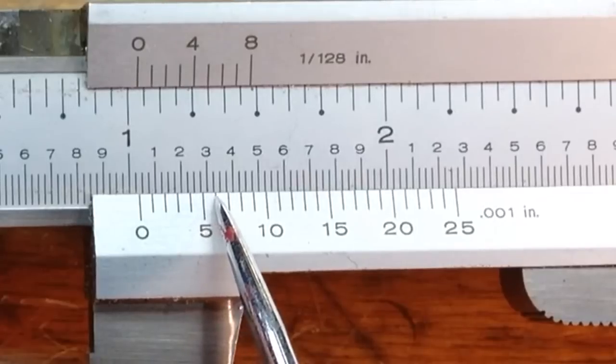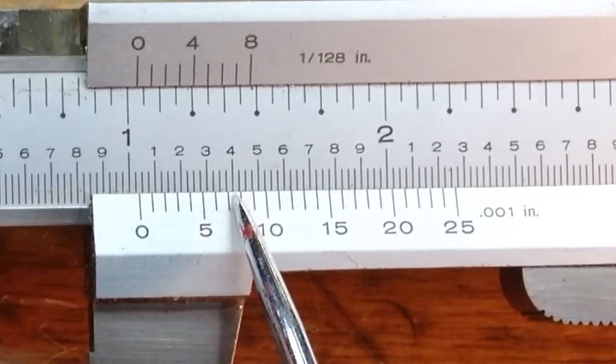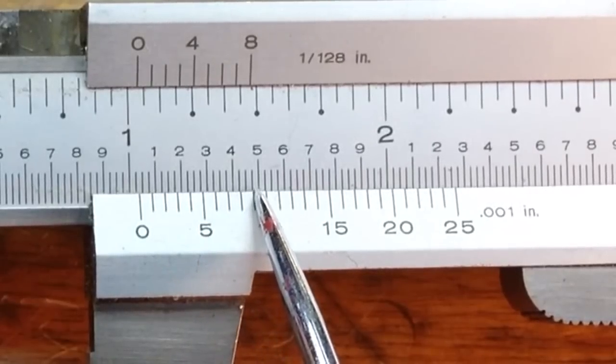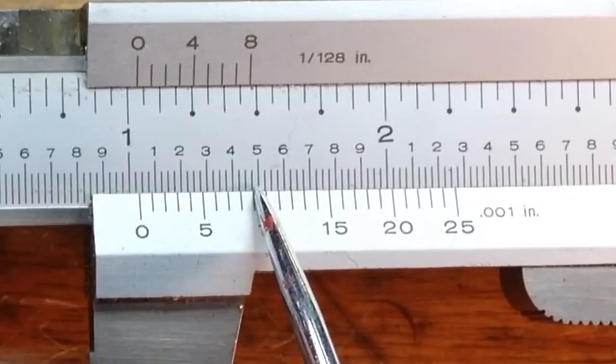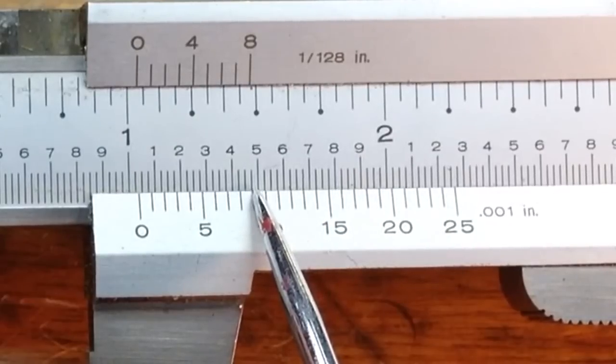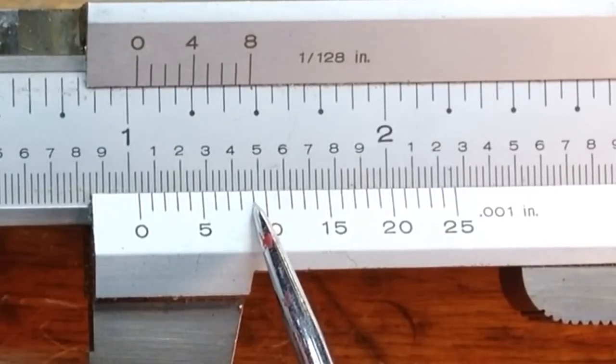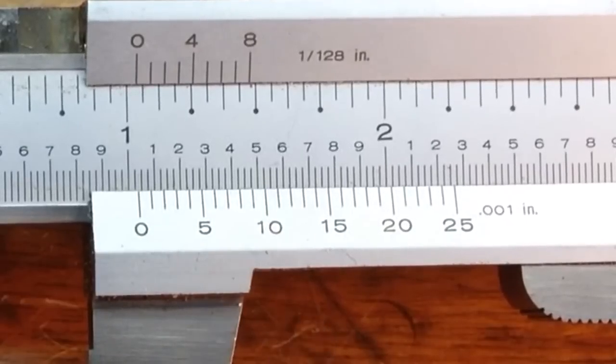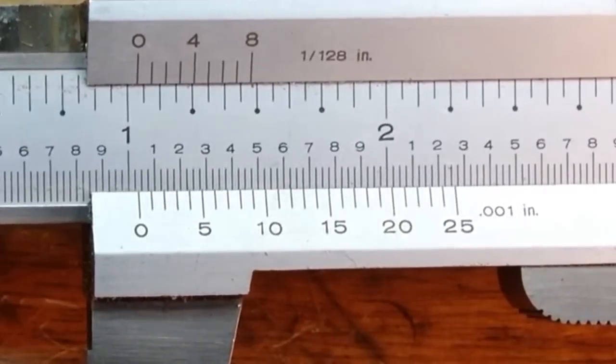Then you can see that it's above the first mark, which is the hundredths mark, so you know it's above 1.025. Then we're going to go down the sliding vernier scale here and find a notch that lines up, and it looks like it lines up right about here.